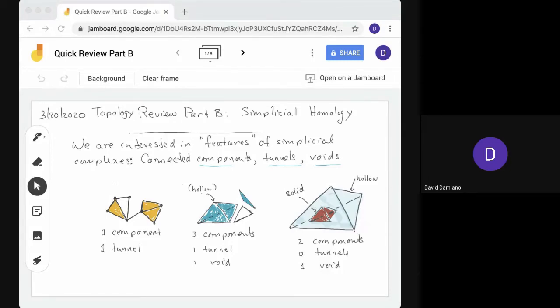Hi, this is Topology Review, Part B, Simplicial Homology. In the first part of the review, Part A, we discussed simplicial complexes and we were focusing on their features: the components, tunnels, and voids.